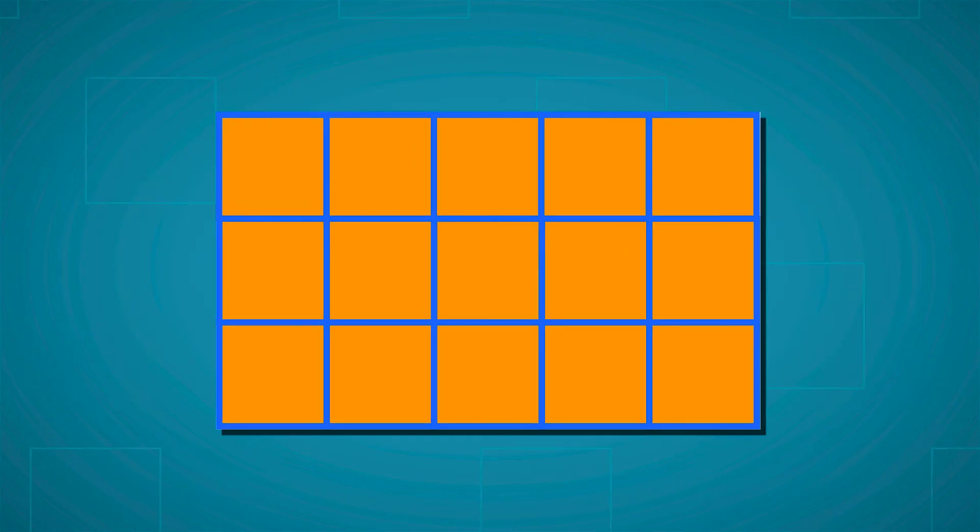When measuring areas, you must imagine that your shape is made up of smaller unit squares. The amount of unit squares counted in your shape will give you the area of the shape.